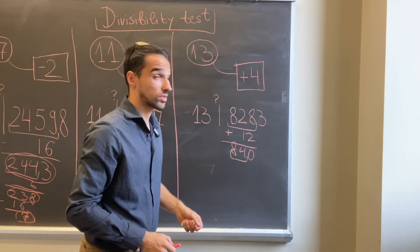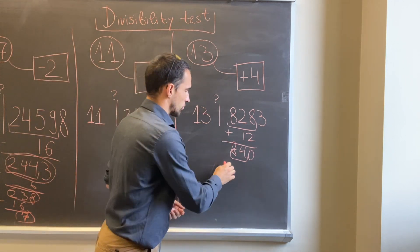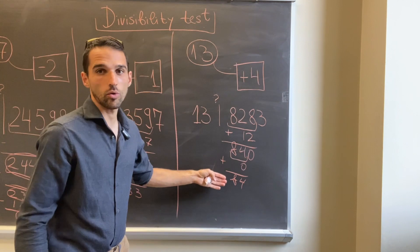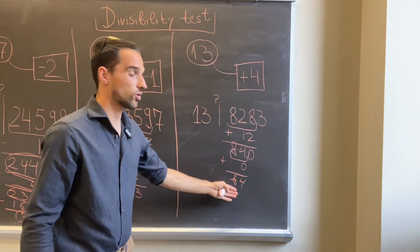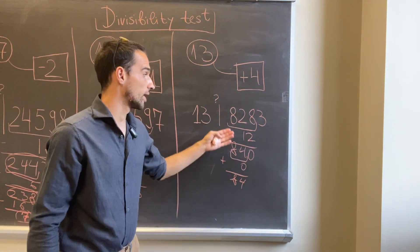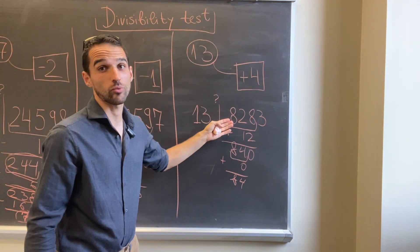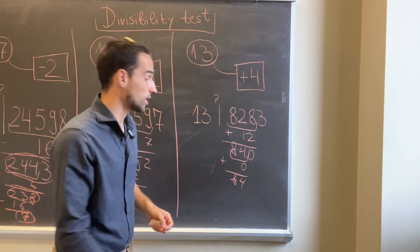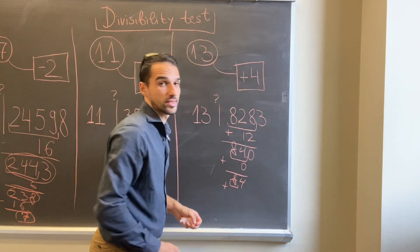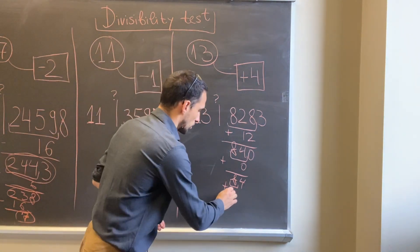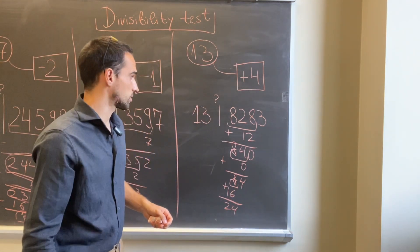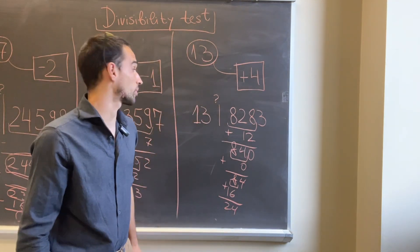Then applying the same rule one more time, we'll take 84 and add 0 times 4. So our initial number won't be divisible by 13. But if we want to be sure we can apply the rule one more time. If we take 8 and add 4 times 4 you will get 24, and 24 is not divisible by 13.